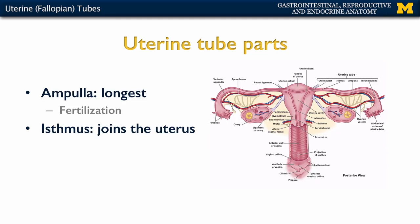Moving more medially, towards the uterus, you have the longest portion of the uterine tube: the ampulla. The ampulla is the most typical site of fertilization — this is where the sperm meets the oocyte and you have formation of the zygote.